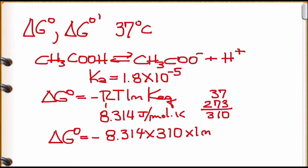The Ka value is given in the data table — in exams the data bank will provide this — which is 1.8 × 10⁻⁵.